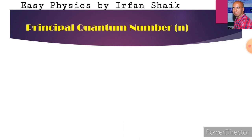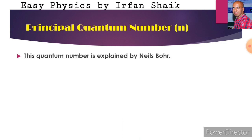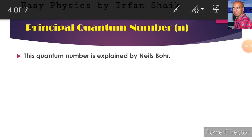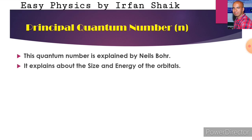The first one is the principal quantum number. This principal quantum number was explained and derived by Niels Bohr. It gives information about the size and energy of the orbitals. This is a very important point. The principal quantum number is represented by the letter small n.